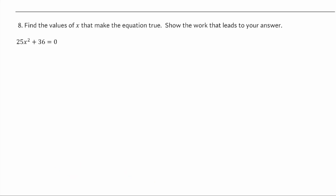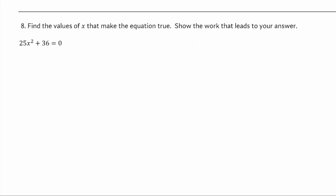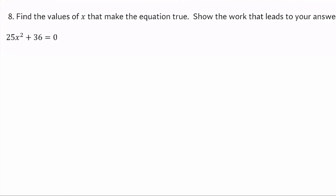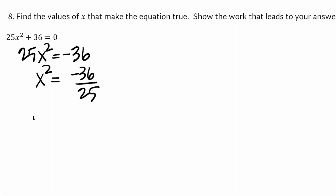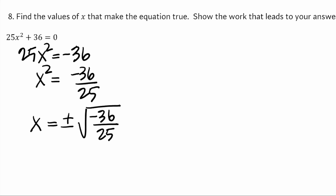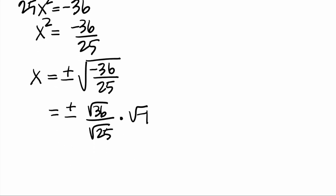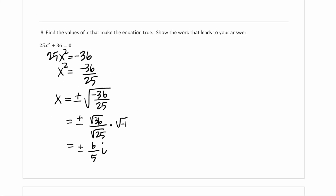Finding the values of x that make the equation true — since there's only x squared in the equation, we can solve it pretty directly. So 25x squared equals negative 36. Solve for x squared by dividing by 25, then take the square root of both sides, remembering to include plus or minus. That's the square root of 36 over the square root of 25 times the square root of negative 1. So that's plus or minus 6 fifths i. That's form A.